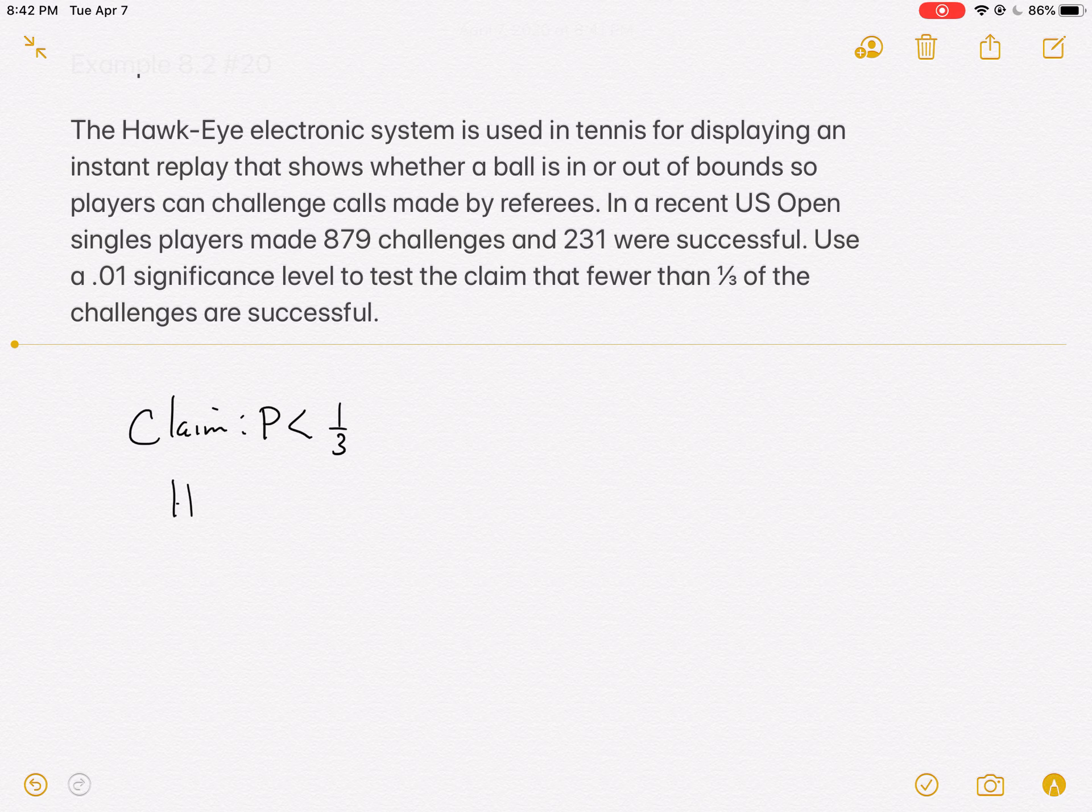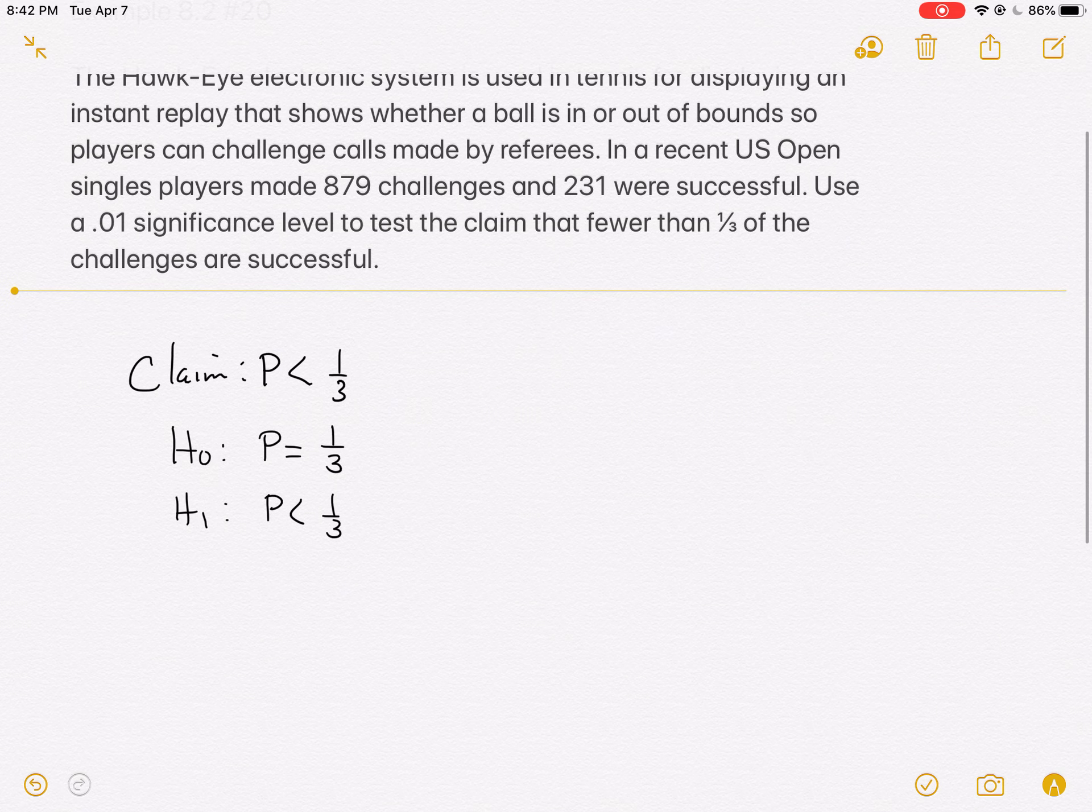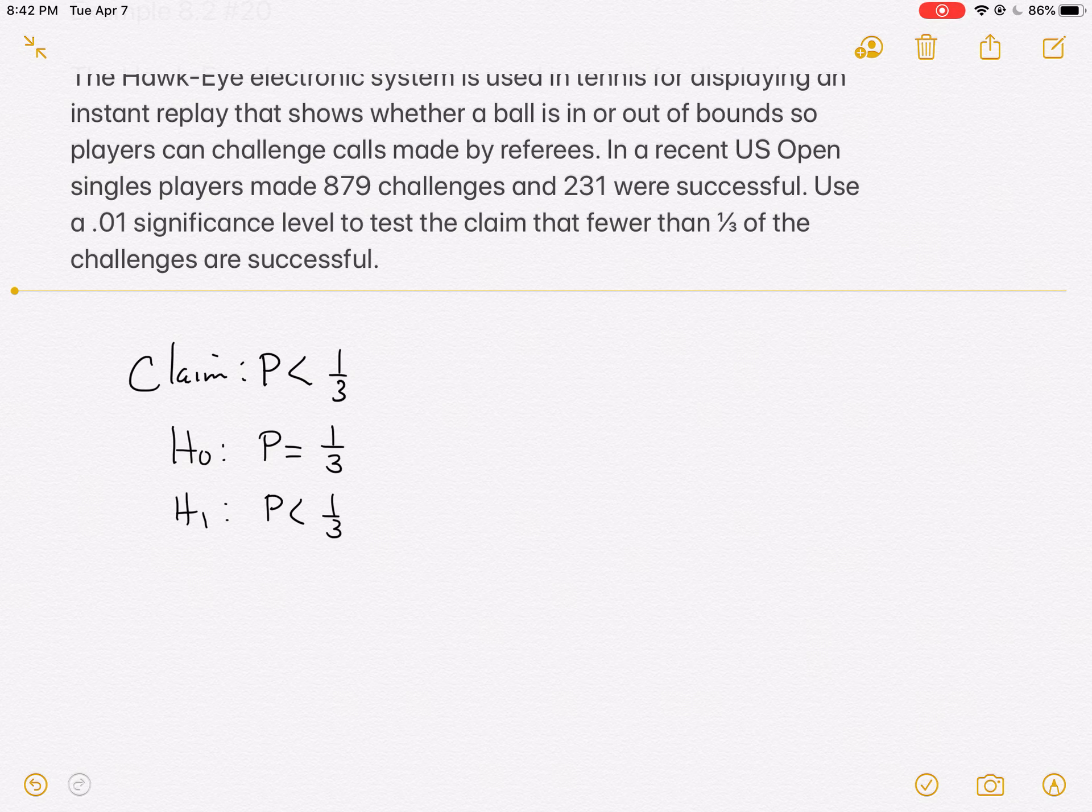Step number two would be to identify the null and alternate hypothesis. The null is p equals one-third because it always has an equal statement, and the alternative hypothesis is the same as the claim. We can already see that this is going to be a left-tailed test with only one tail, and all of the 0.01 is going to be in there.